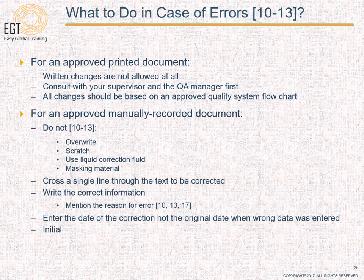If the document is an approved document that is manually recorded, it is easier to handle errors. Do not scratch or override the data, and do not use liquid correction fluid or masking tape. What you need to do is cross a single line through the text to be corrected such that the text is still readable, write the correct information beside it, mention the reason for the error, enter the date of the correction, and initial.